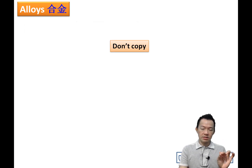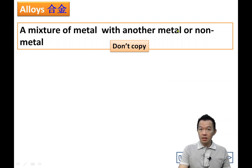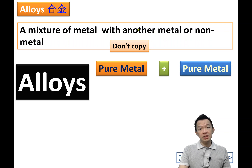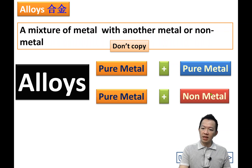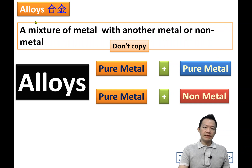So what is alloy? Don't copy yet. Informally, alloys are a mixture of one metal with another metal, or a metal mixed with a non-metal. But this simple answer, we don't accept in your chemistry exam. So don't copy this version.